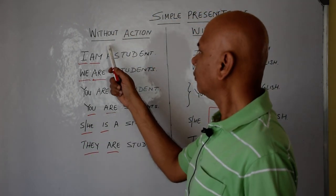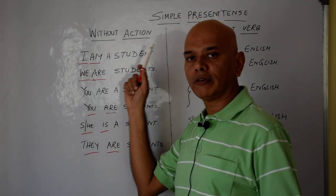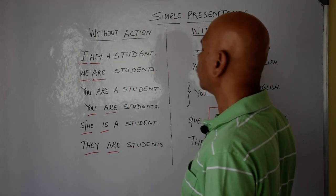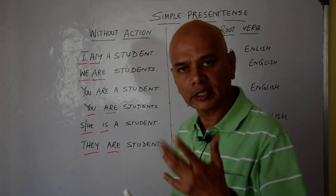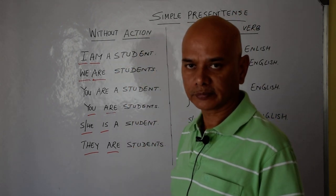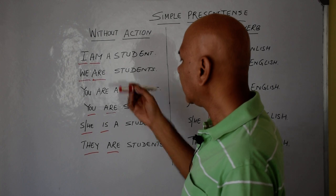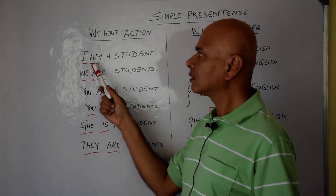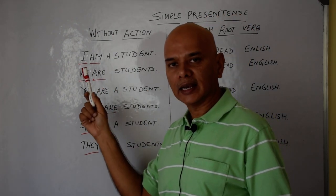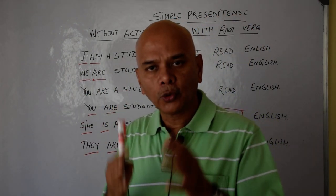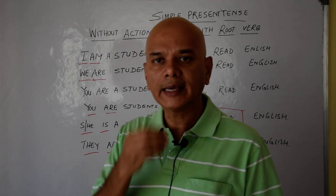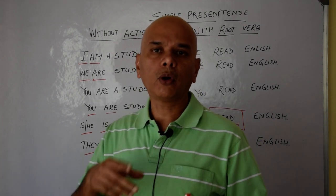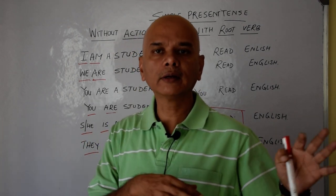We'll make sentences in two forms: one is without action, and the other is with the root verb or with an action. First, without action — when there is no action involved, like eat, sleep, drink, talk, walk, run, go.